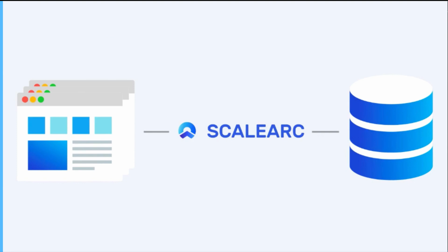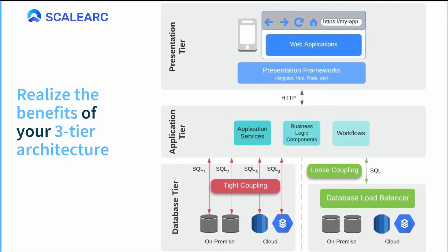ScaleArc is database load balancing software. It drops transparently between your apps and the database, uses deep integration to allow it to reroute traffic during outages, queue writes and transactions during failovers, and all of this is transparent to your app and to your customers. Now you can actually leverage the benefits of that three-tier architecture that you've had.